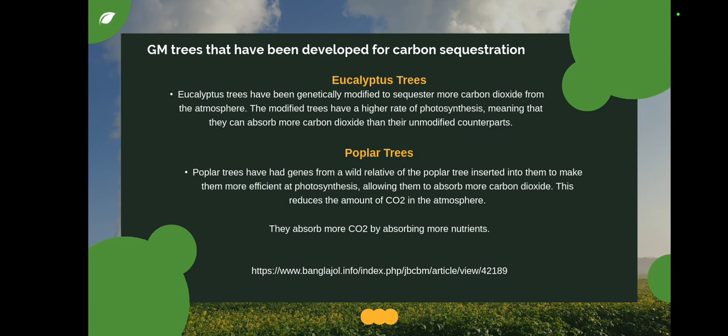Poplar trees are also genetically modified. They have genes from a wild relative of the poplar tree inserted into them to make them more efficient at photosynthesis. By increasing photosynthesis efficiency, these trees absorb more CO2 from the atmosphere, which reduces the amount of CO2 in the environment.